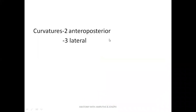The rectum is not straight — it has curvatures. It has curvatures in two dimensions: anteroposteriorly, there are two curvatures, and laterally, right to left, there are three curvatures. So two anteroposterior curvatures and three lateral curvatures.